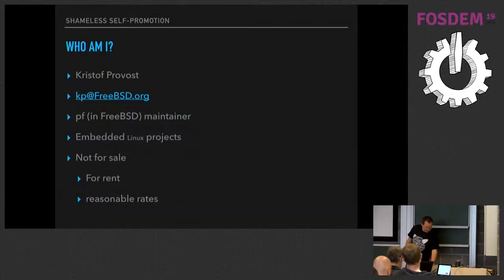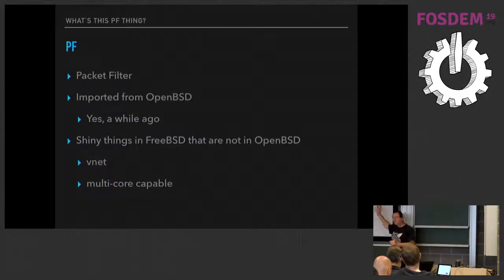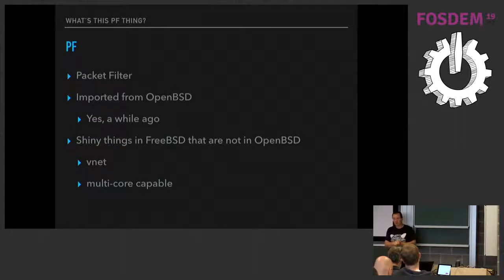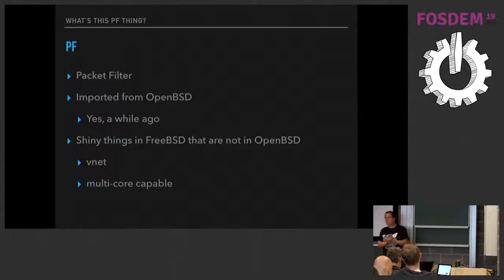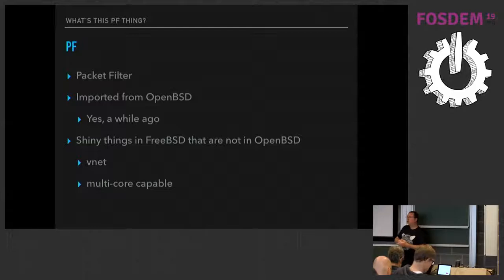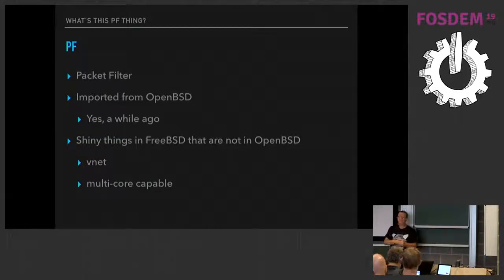PF is a packet filter. I trust we all have a vague idea of what firewalls do — they look at your packets, clock their tongues disapprovingly, and then throw some of them away. Sometimes they let packets through; I mostly think that's okay, though that's usually a mistake. We imported it from OpenBSD.